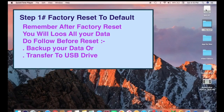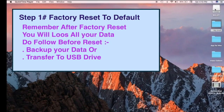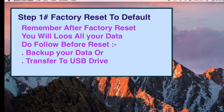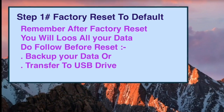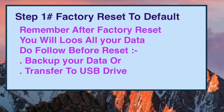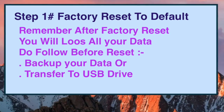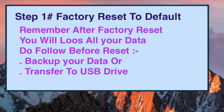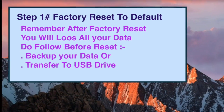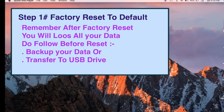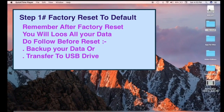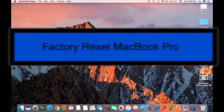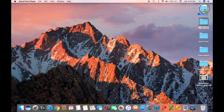Now let's start with the factory reset. There can be many reasons you want to do this — you may want to sell your MacBook or it's not working the way you want. The first step is: if you have data you want to save, back it up. You can back up to your iCloud account or use an external storage device — a USB drive or hard drive depending on your data size. Plug it into your MacBook and copy or drag whatever you want to save.